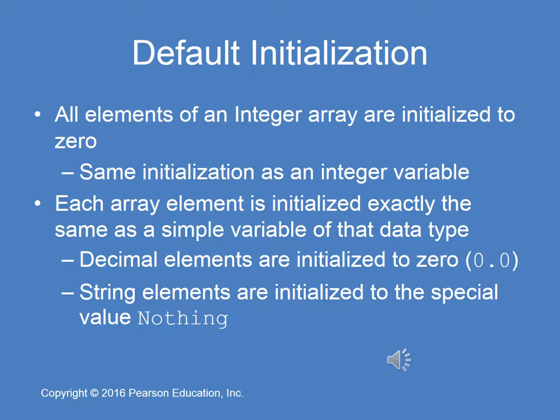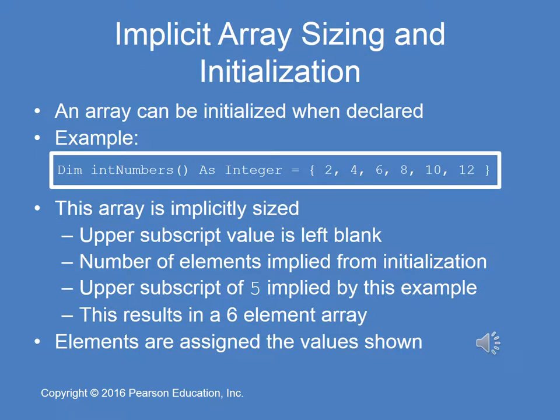All elements of an integer array are initialized to zero. So if you just declare an integer array like we did in the previous example, you're going to get seven sequential declared memory locations for integers, and they will have zero. Decimal elements are initialized to zero. String elements are initialized to the special value nothing — empty, if you will. You can also initialize the elements of an array during the declaration.